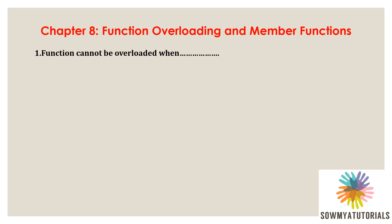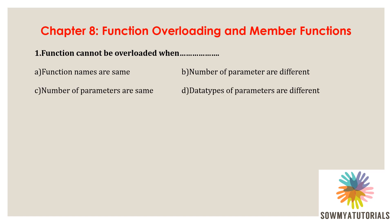The first question is: function cannot be overloaded when? Options are: A) function names are same, B) number of parameters are different, C) number of parameters are same, D) types of parameters are different. Already I told that the definition is that function overloading means two or more functions have the same name but differ in the number of arguments and also the data type of the arguments.